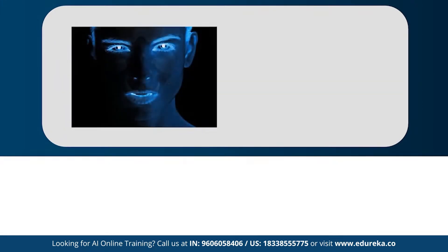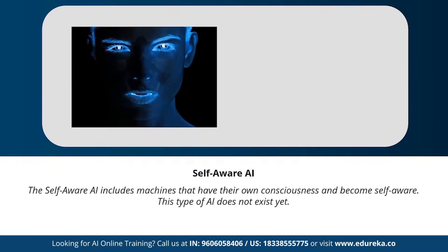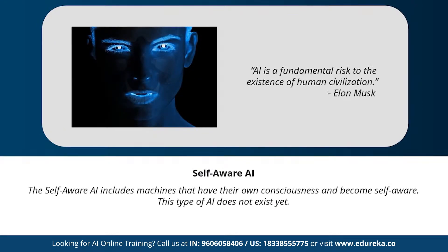The last type of AI is self-aware artificial intelligence. Let us hope we don't reach the state where machines have their own consciousness and become self-aware. This type of AI is a little far-fetched, but in the future, achieving a stage of super intelligence might be possible. Geniuses like Elon Musk and Stephen Hawking have constantly warned us about the evolution of AI. Do you think we'll ever reach the stage of artificial super intelligence? Let me know in the comments.